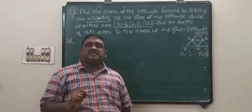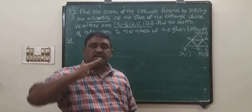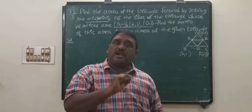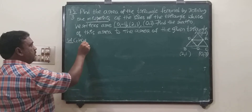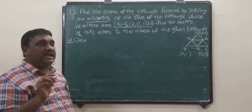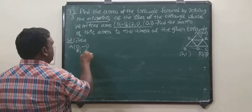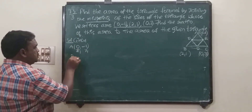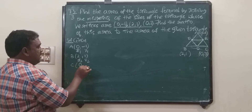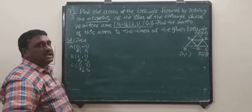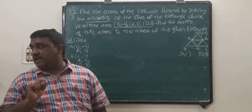So simply what is there in the problem? Three vertices, three midpoints. We need to find out: area formed with midpoints is to area formed with vertices. Given: name the first point as A (0, -1), let it be x1, y1. B (2, 1), let it be x2, y2. C (0, 3), let it be x3, y3. Total three vertices are there.